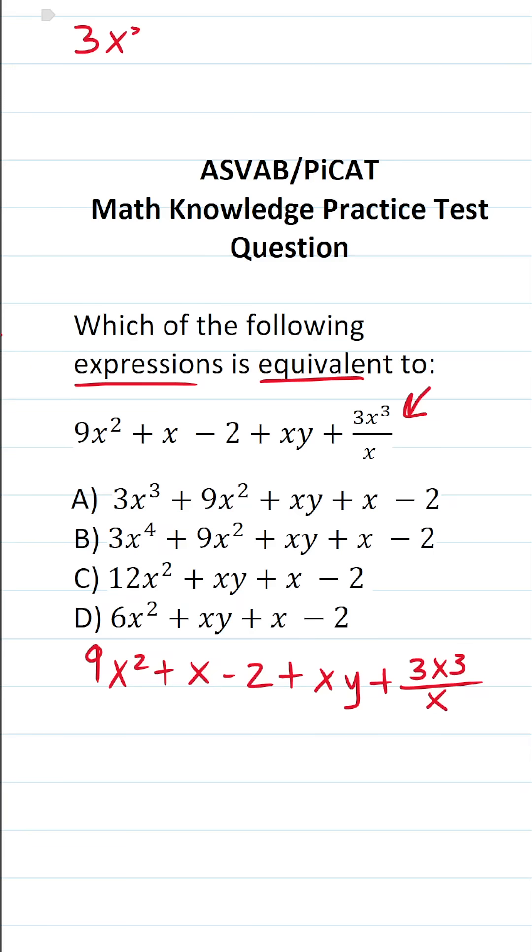We have 3x to the third over x. Let's factor out this 3 for a second so we can treat this like this: 3 times x to the third over x. Well, I can simplify x to the third over x using one of the laws of exponents called the quotient rule.